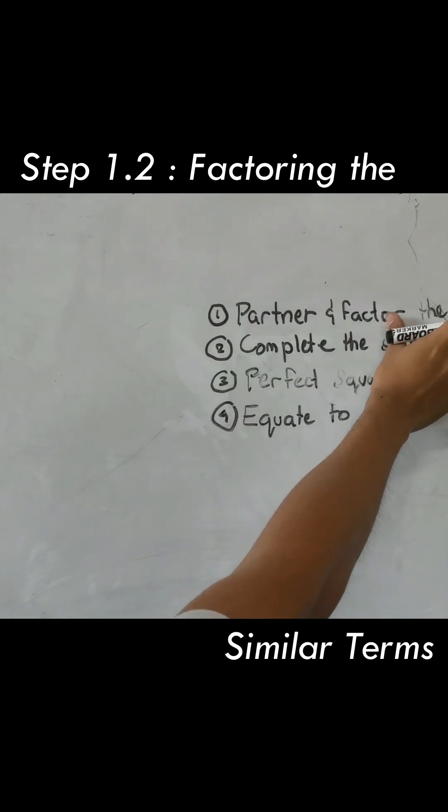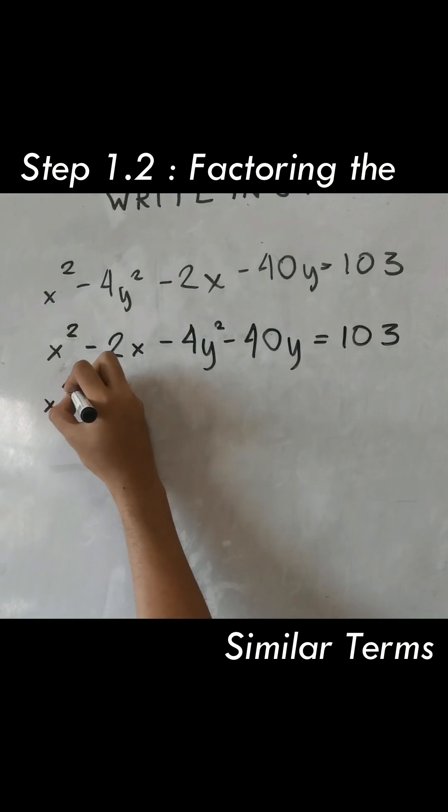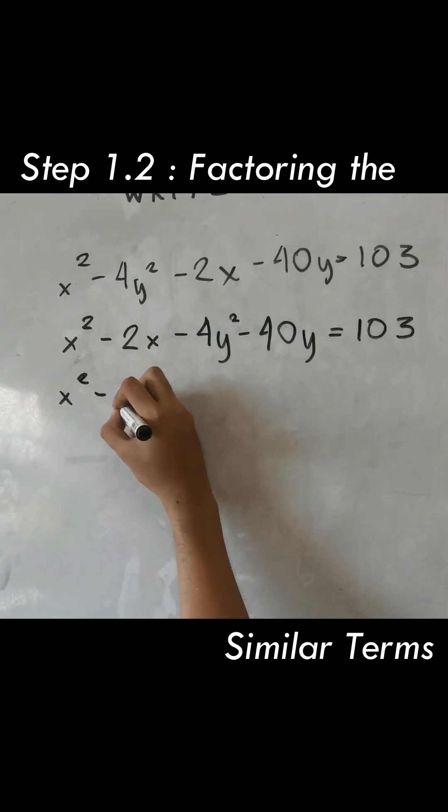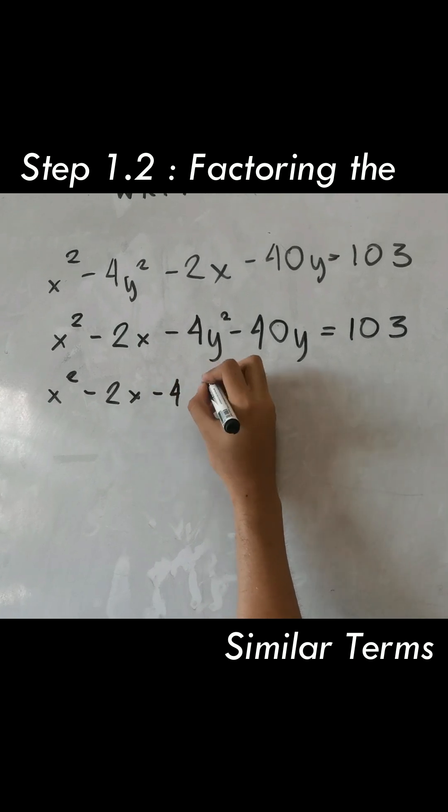And here we need to factor the terms. x squared minus 2x is already factored, and has a factor of negative 4.